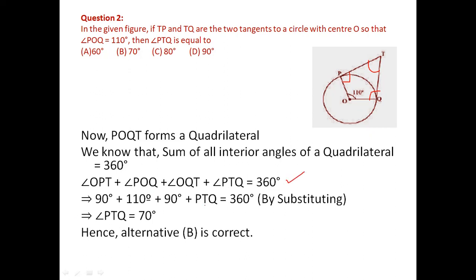So 90 + 110 + 90 + PTQ = 360, giving PTQ = 360 − 290 = 70 degrees. A shortcut: since OPT and OQT are each 90°, they sum to 180°, so the remaining two angles also sum to 180°. If POQ is 110°, then PTQ = 180 − 110 = 70 degrees. Opposite angles in this configuration are supplementary.